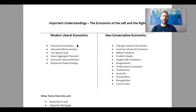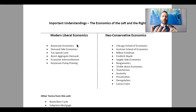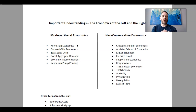Keynes says during a boom we need to slow it down; during a bust we need to pick it back up. So when the economy is busting, we lower taxes, we lower interest rates, and we create deficit spending jobs. We spend money on infrastructure.